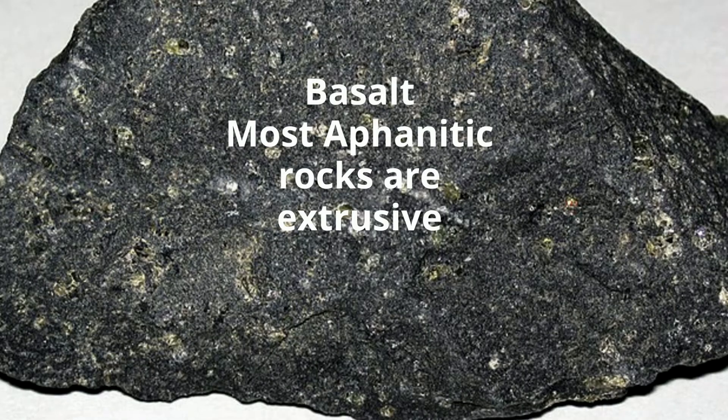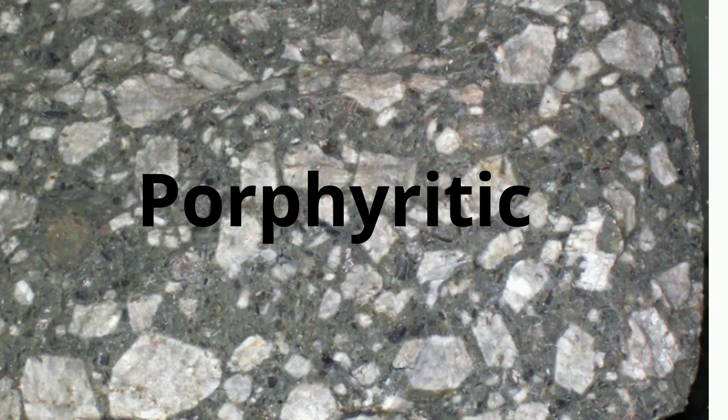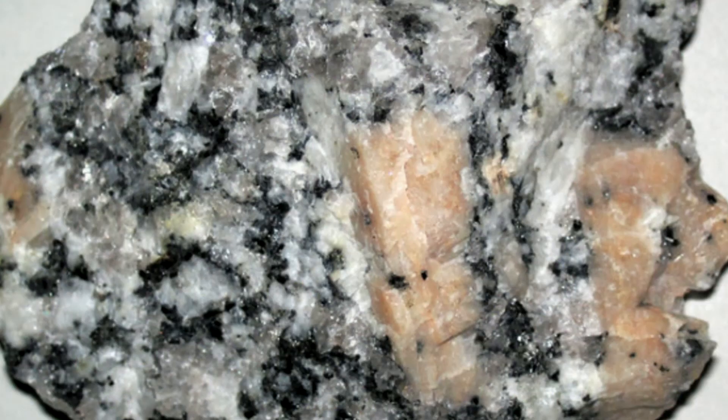A Porphyritic igneous rock is a rock that has a distinct difference in the size of crystals, with at least one group of crystals larger than the other.